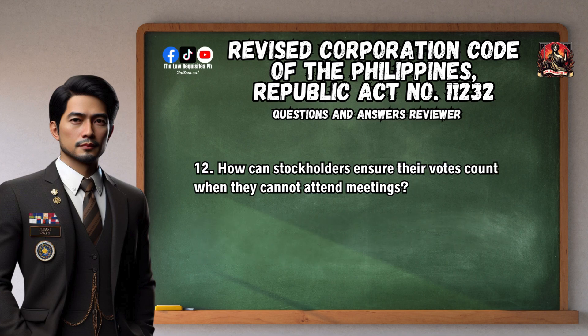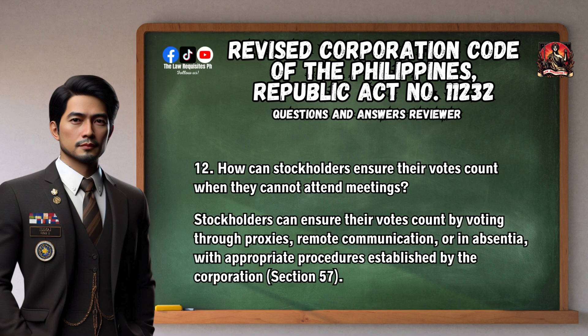Question 12: How can stockholders ensure their votes count when they cannot attend meetings? Stockholders can ensure their votes count by voting through proxies, remote communication, or in absentia, with appropriate procedures established by the corporation. Section 57.